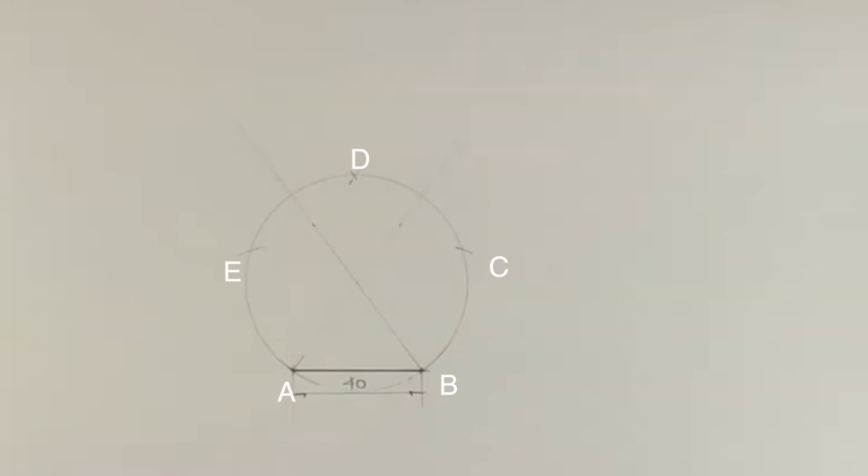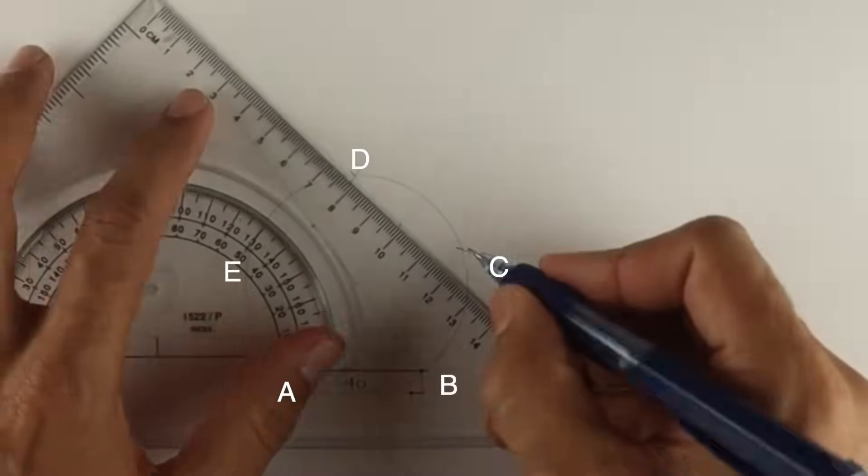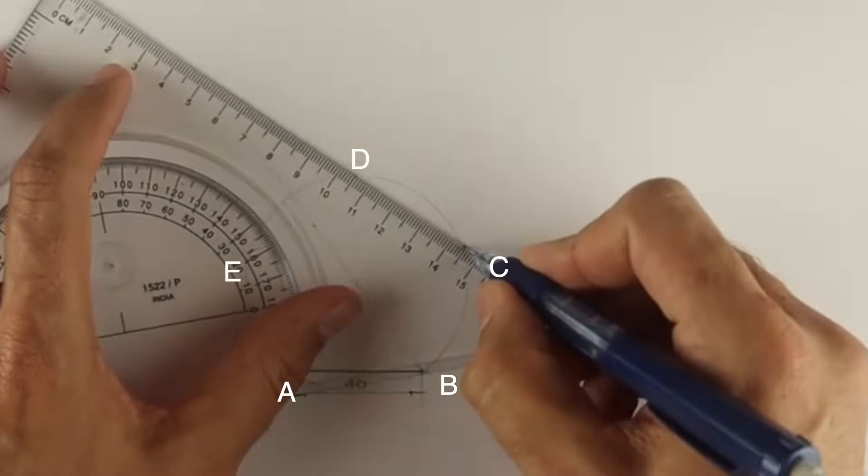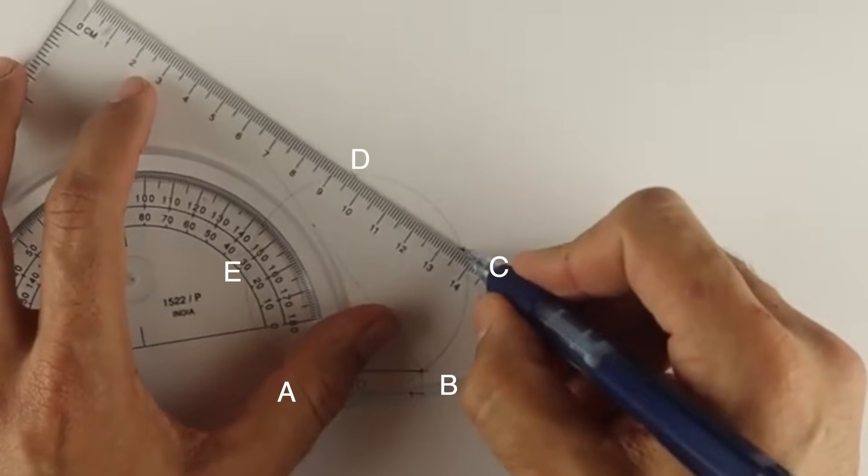From both C and E, you'll get point D. So remember all the sides are 40. When you join this, you'll get a pentagon.